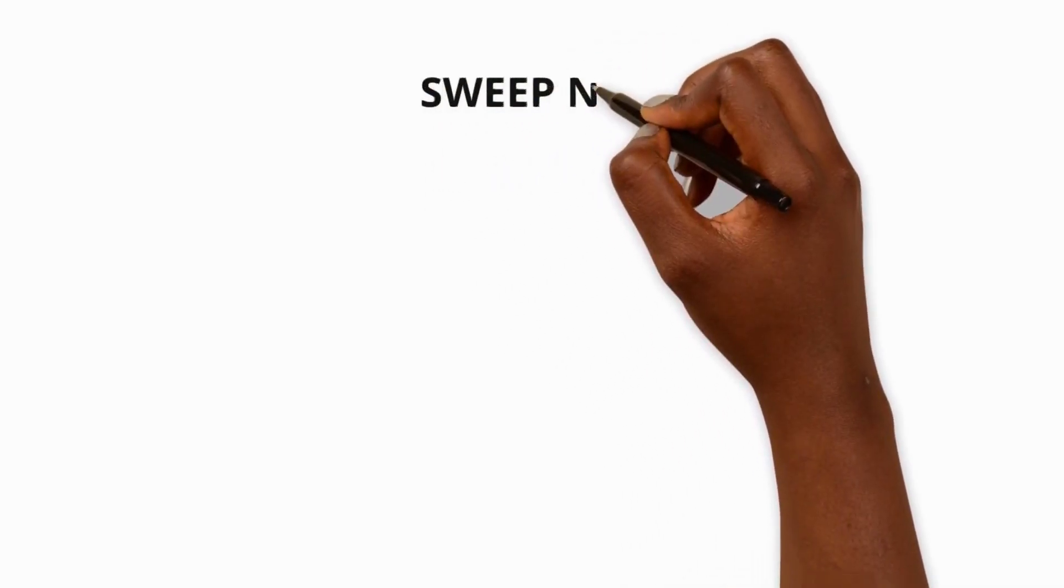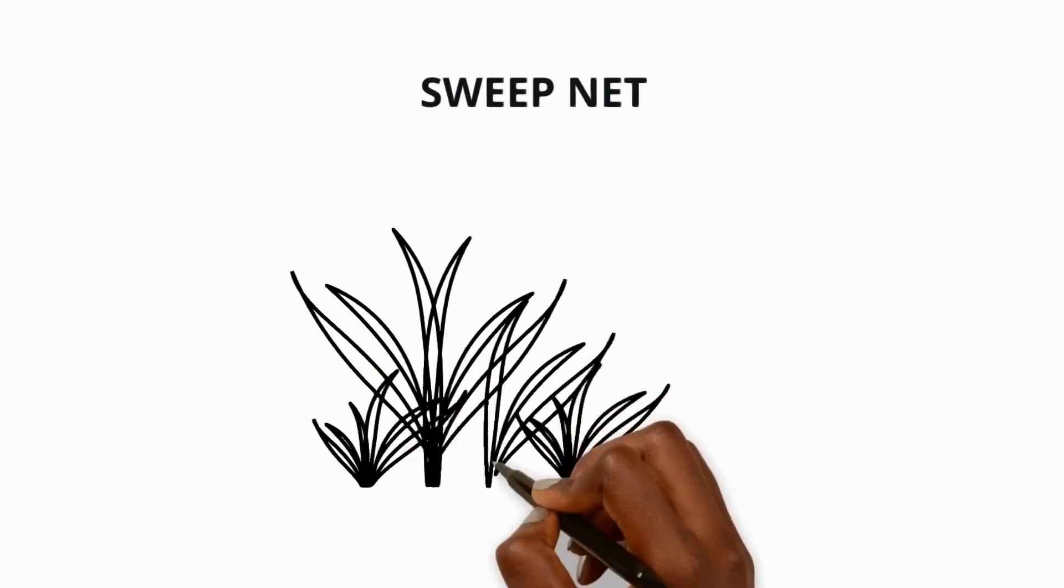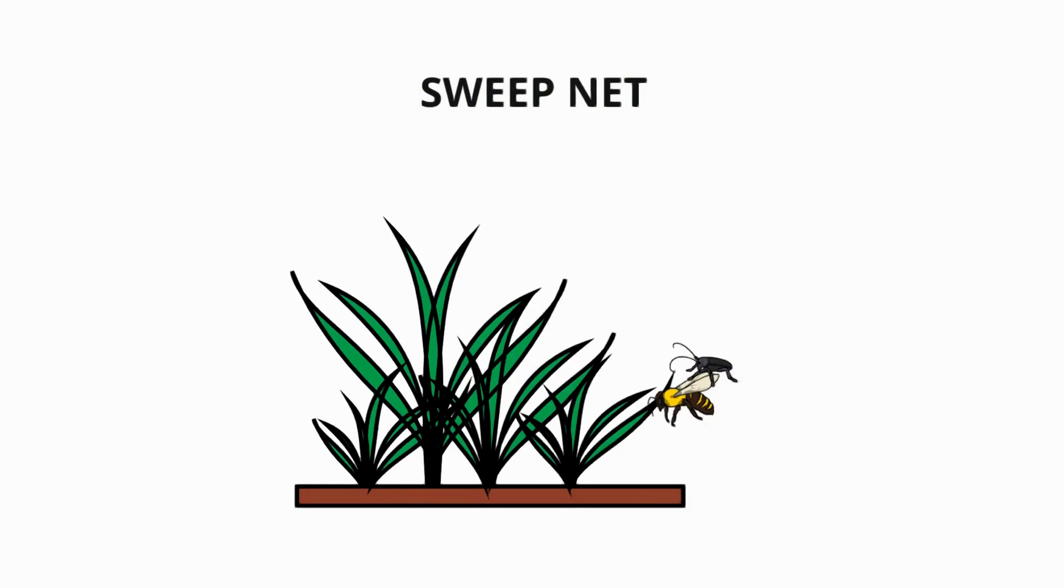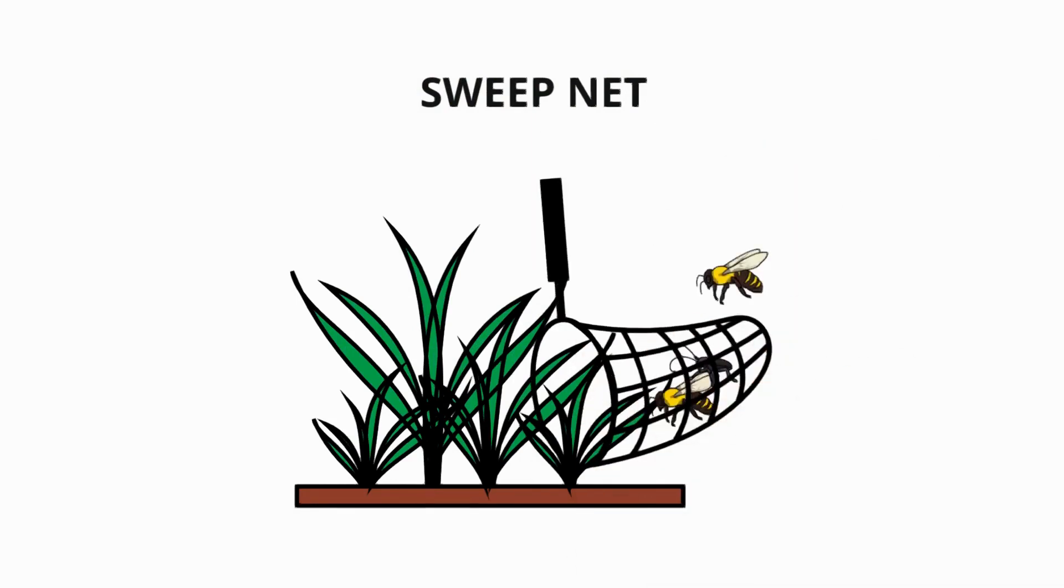Another way to observe invertebrates is by using a sweep net. This is a net with a long handle that you can use to sweep through long grass or ponds where insects and other invertebrates may live. You can then carefully examine the contents of the net to identify and observe the invertebrates.